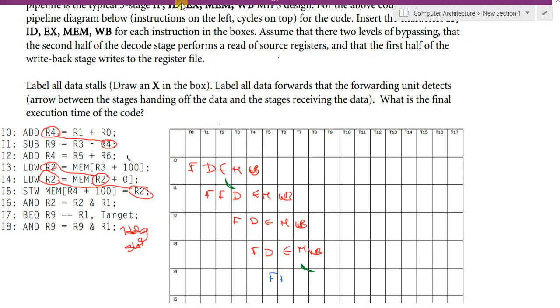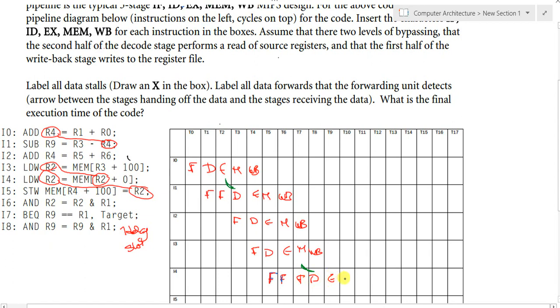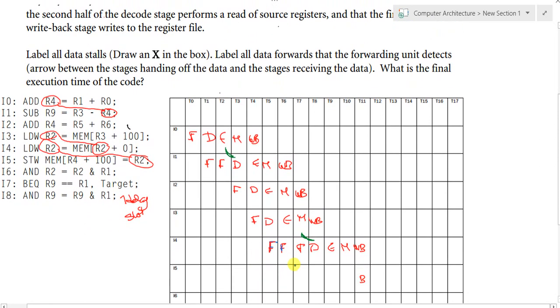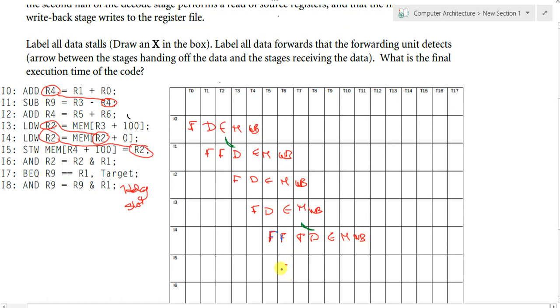So the next instruction can start fetching. I4, fetching, fetching, again fetching, decode, execute, memory, and write back. So I5, in I5, I can't start here because of the structural hazards. So I'll naturally start fetching here. In I5, I have to take the value of R2 and store it in the memory address of R4 plus 100. So when the value of R2 will be available, it will be available also after the memory stage.